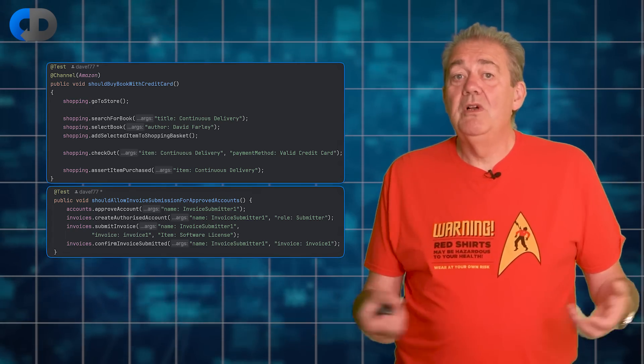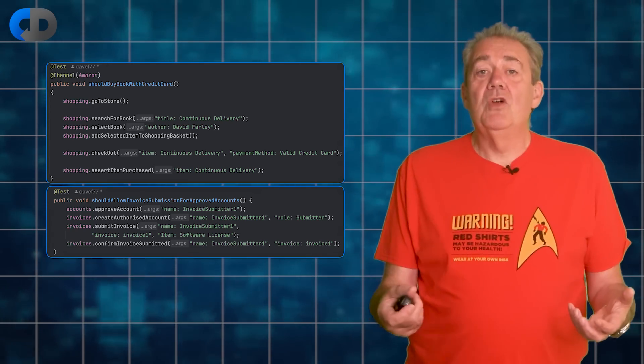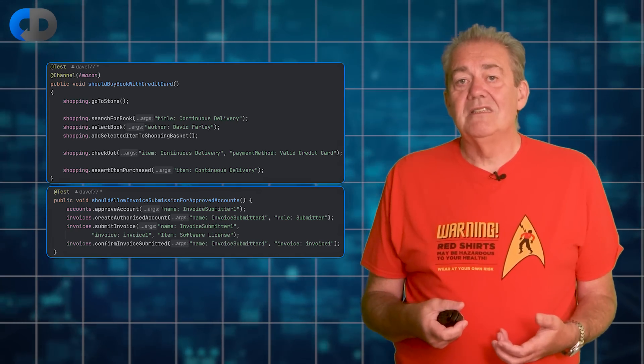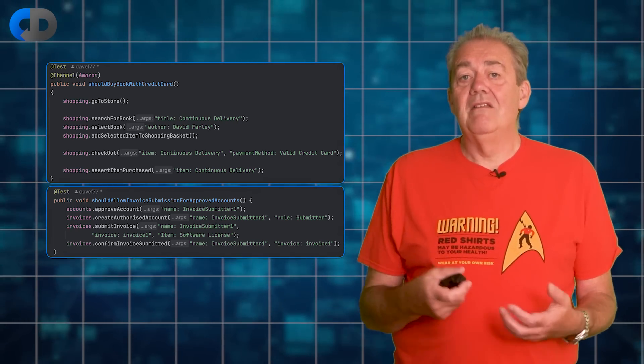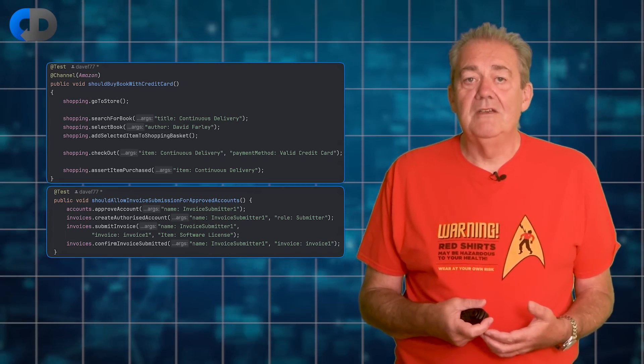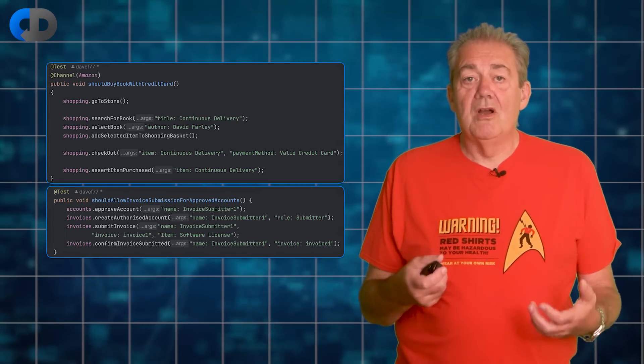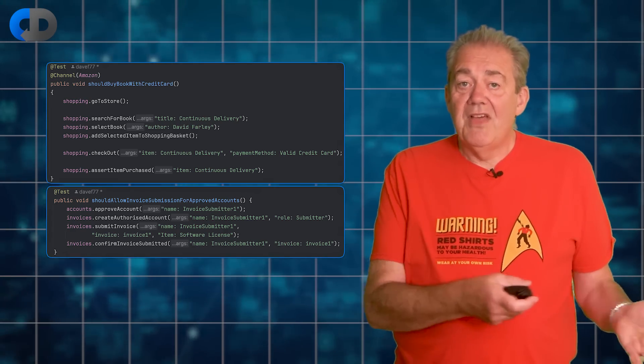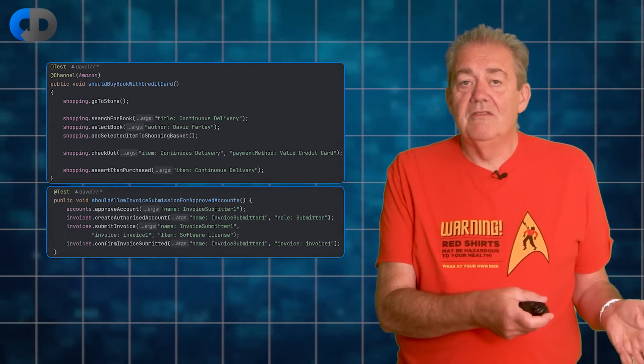I describe unit testing and acceptance testing in combination as being at the very heart, essential parts of my recommended testing strategy. When we take this approach we drive the whole development process from these tests. They are the genuine specification of our system.